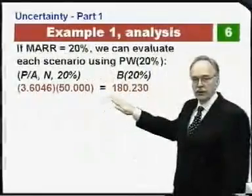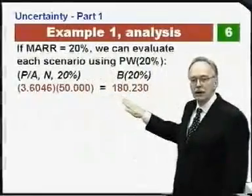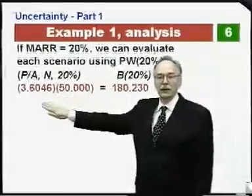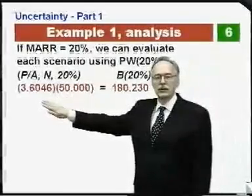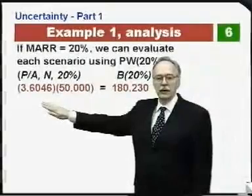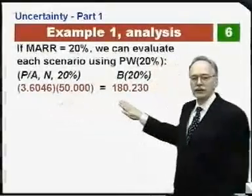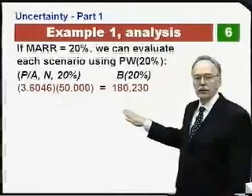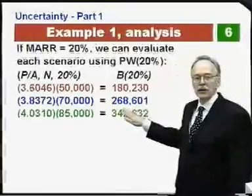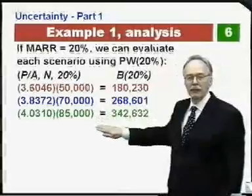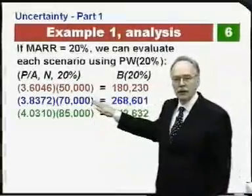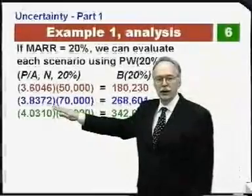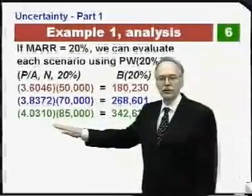We're computing the present worth of the cash inflows. For the pessimistic scenario, that's $50,000 per year with a lifetime of seven years, so the series present worth factor is based on N equals seven — giving a present worth of inflows of $180,230. We do the same for the most likely and optimistic scenarios, with eight years and nine years respectively.